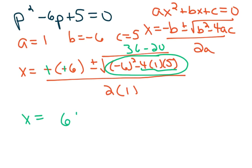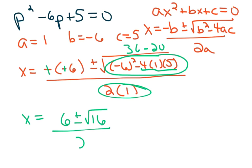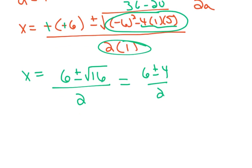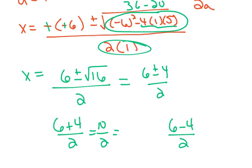Those two negatives become a positive, and in the denominator, 2 times 1 is 2. Since the square root of 16 is 4, I get 6 plus or minus 4 over 2. So there are two solutions: 6 plus 4 divided by 2, and 6 minus 4 divided by 2. That gives us 10 over 2, which is 5, and 2 over 2, which is 1.